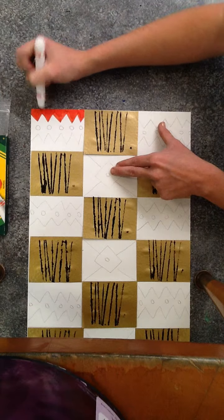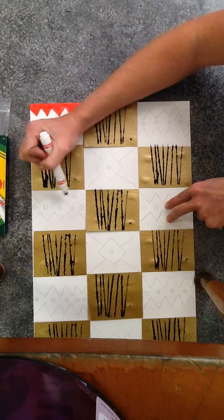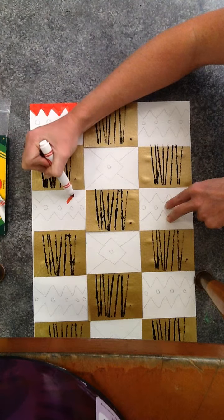Because I have red on the right side of this square, when I move to this square, I'm also going to have the red on the right side.